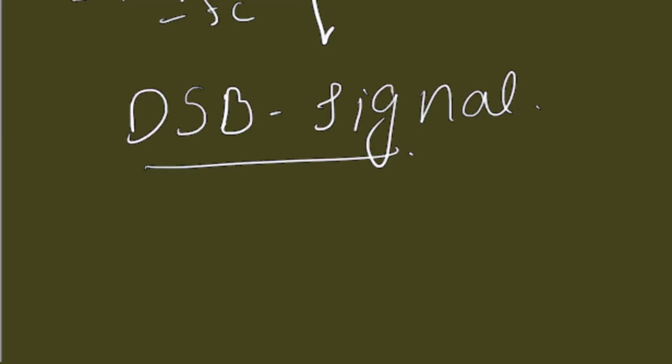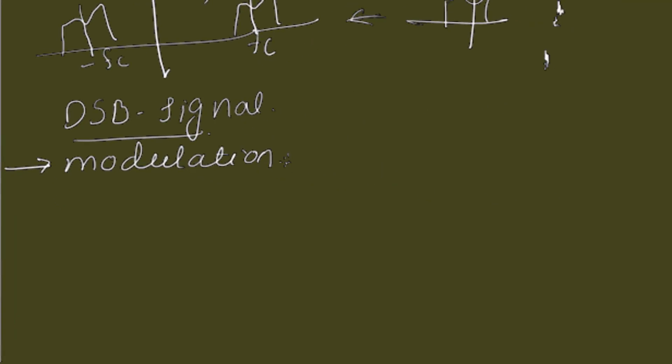Now, the modulation definition is, this is one of the definition of the modulation, what we have considered here. And now, the modulation definition is changing any one of the parameter of the carrier, that is either amplitude, frequency or phase of the carrier with respect to the message signal.